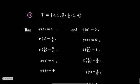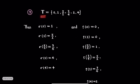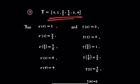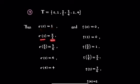The next example is of a time scale containing the elements 0, 1, 3/2, 7/4, 2, and 4. We have sigma(0) = 1, sigma(1) = 3/2, sigma(3/2) = 7/4, sigma(2) = 4, and sigma(4) = 4.